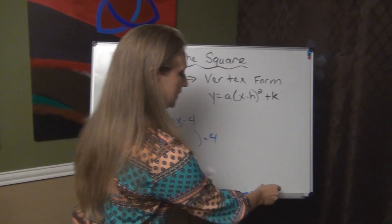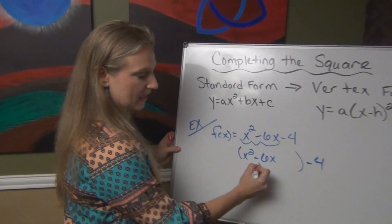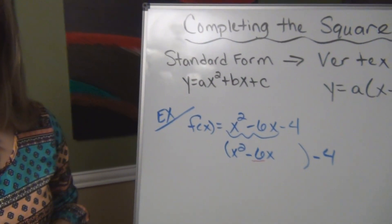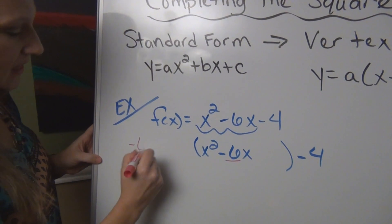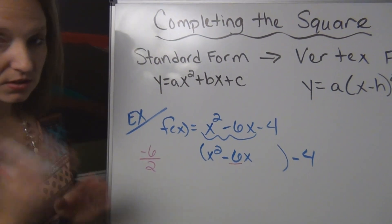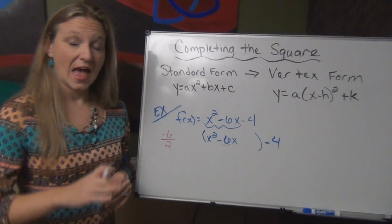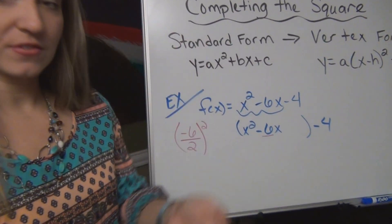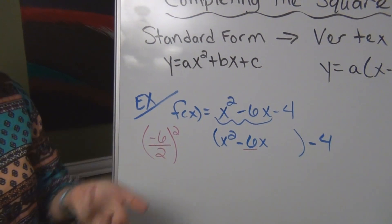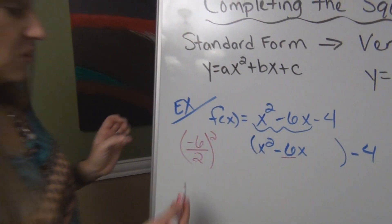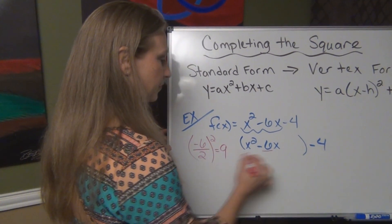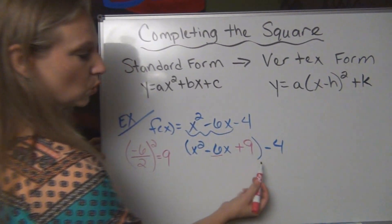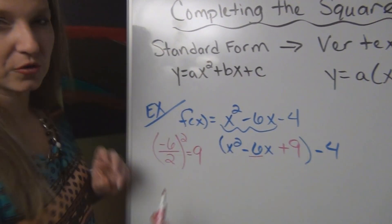What I want to do is I want to make the first two terms into a complete square. And how you get it into a complete square is you want to take this middle number, the number in front of x, you're going to take that number and you're going to half it, or divide by two, and then you're going to square it. So half of negative six is three, squaring it is nine. So that number is what we need to add in order to make this into a perfect square.